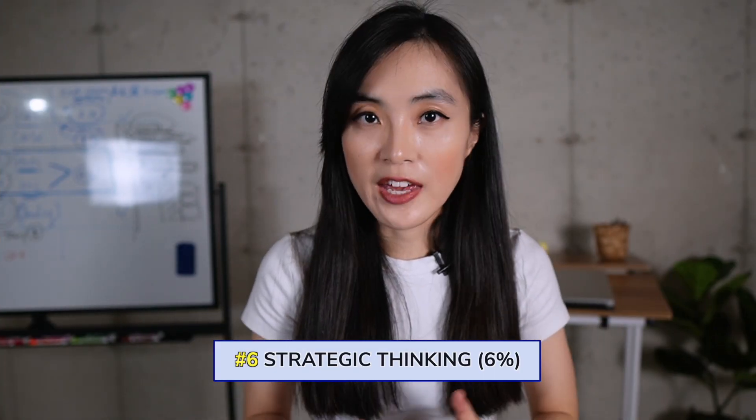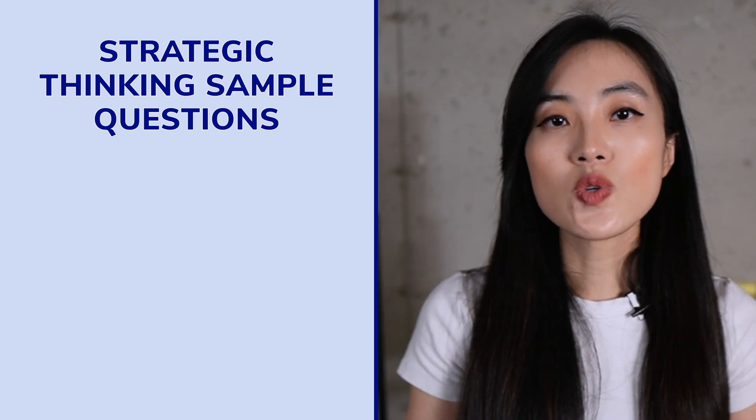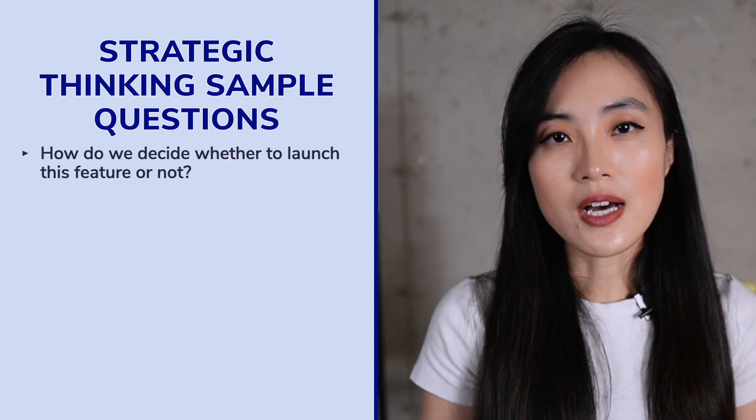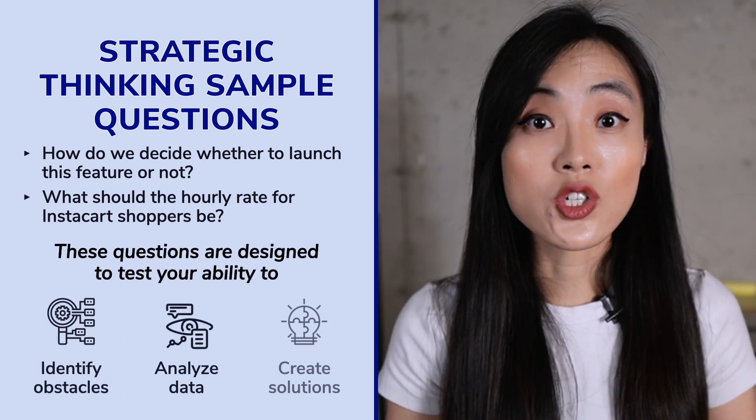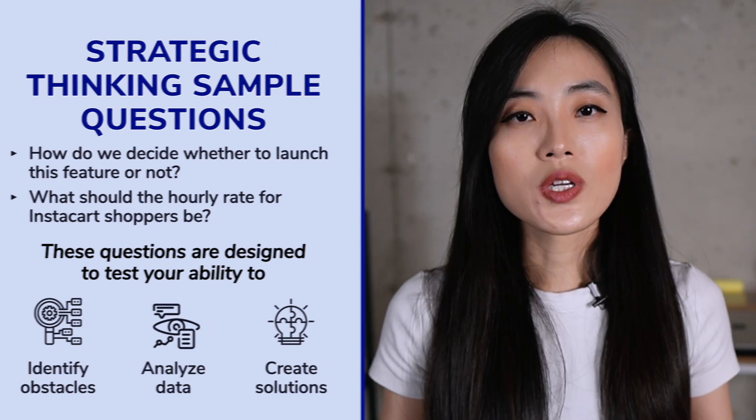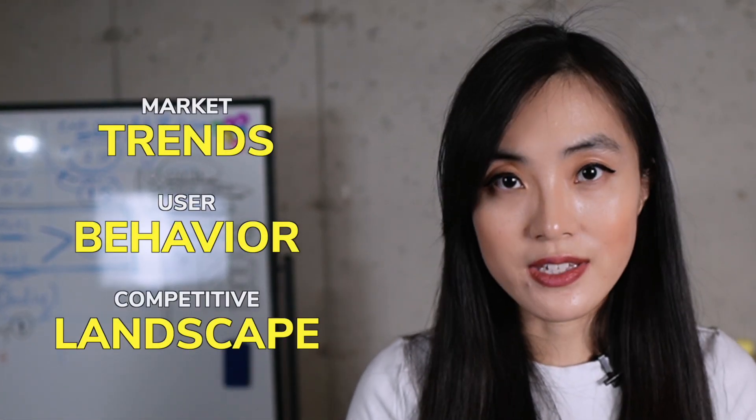The strategic thinking category evaluates a data scientist's ability to analyze complex scenarios and make informed decisions with long-term impact. Example questions include: Back in 2016 there was no Stories feature on Instagram — how do you decide whether to launch it? What should the hourly rate for Instacart shoppers be? These questions require considering market trends, user behavior, the competitive landscape, and balancing short-term and long-term goals.